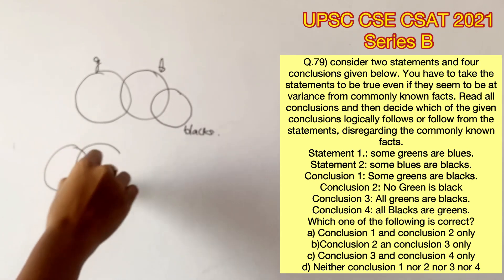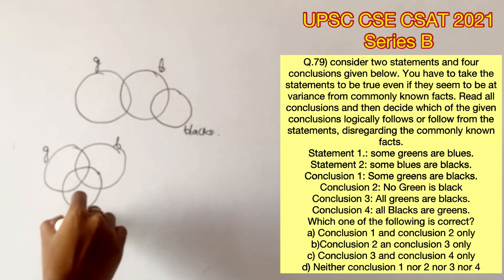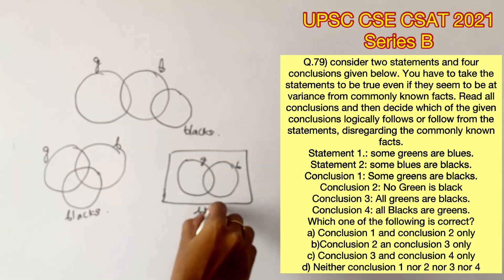The first case would be that no greens will be blacks. The second case can be that greens, blues and blacks can intersect. The third case might be that all greens and blues are blacks.